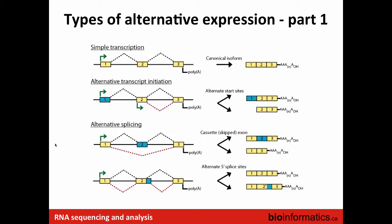At the top you have a simple transcription and splicing event: a hypothetical gene with three exons and two introns, introns removed, giving a canonical isoform. You can have alternative transcript initiation with one or more alternate first exons, giving longer or shorter transcripts, and classic cassette exon splicing where exon two is either included or skipped.